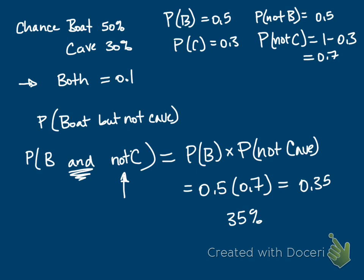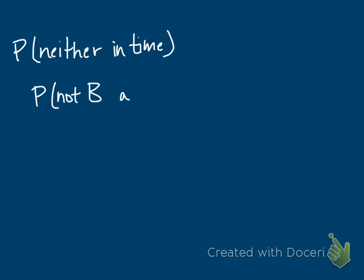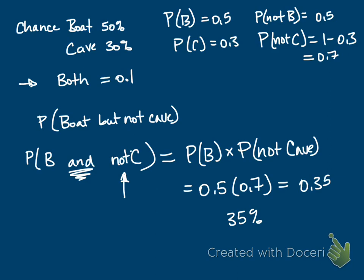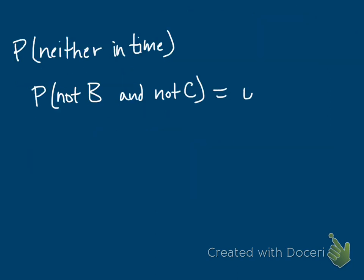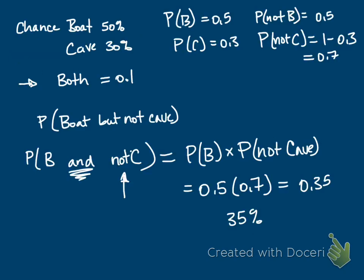Another question might be: what's the probability that the boat's not there and the cave's not there — that neither are in place when he needs them? This is really asking for the probability of not boat AND not cave. Probability of not boat is 0.5, and probability of not cave is 0.7. So the probability of him not making either one in time is also 35 percent. You just play around with the little rules, and that's how we answer the worksheet.